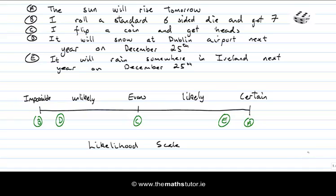From a mathematical point of view, this way of talking about likelihoods is not very satisfactory — we'd like to be more precise than this scale allows. For example, suppose you want to pick a player to take penalties for your soccer team. All professional soccer players are likely to score a penalty, but some are more likely than others, and knowing exactly who is most likely is important information for a coach. In later lessons we'll see how probability theory allows us to be more precise than this likelihood scale allows.